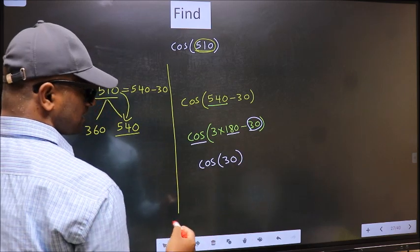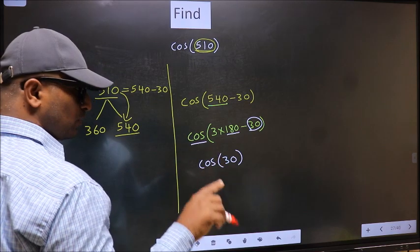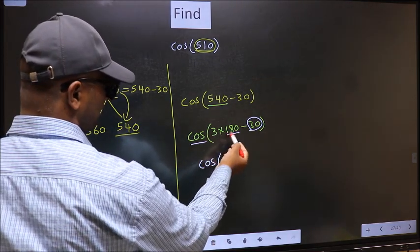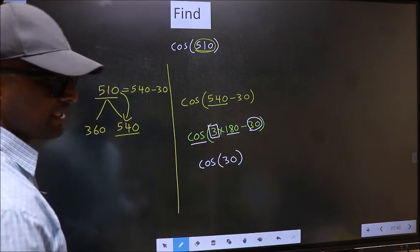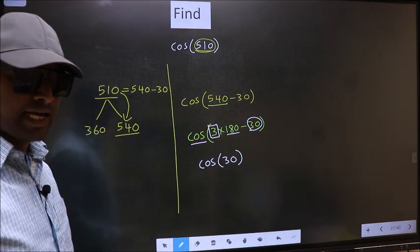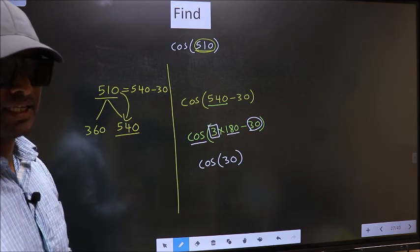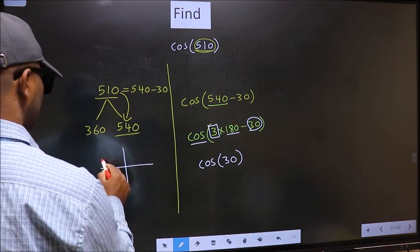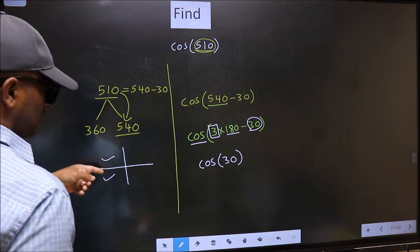Now the question is, will we get here plus or minus? To answer that, we should look at the number before 180. That is 3. And 3 is odd. And all the odd multiples of 180, they lie either in the second or in the third quadrant.